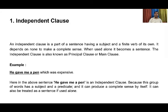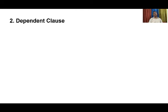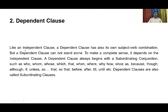Now we shall move to dependent clause, which in other words we call a subordinating clause. A dependent clause, as the name suggests, is dependent on something. That means a dependent clause cannot make a full sense by itself. To complete the sense, it has to depend on something. Like an independent clause, a dependent clause also has its own subject-verb combination. But a dependent clause cannot stand alone. To make a complete sense, it depends on the independent clause.